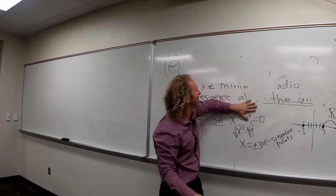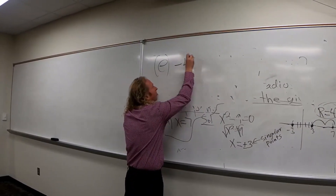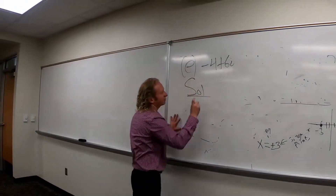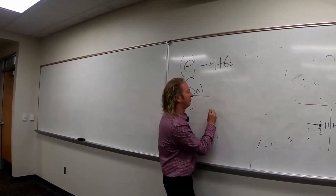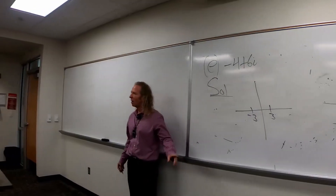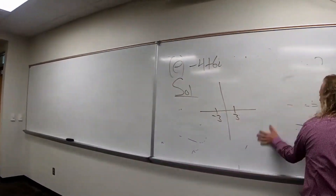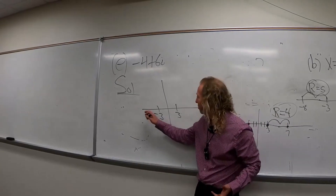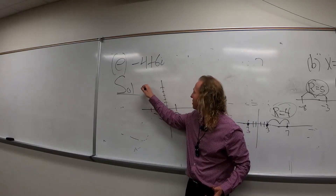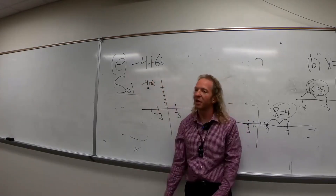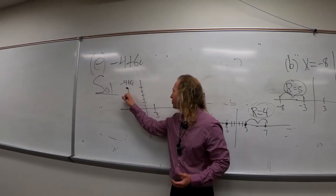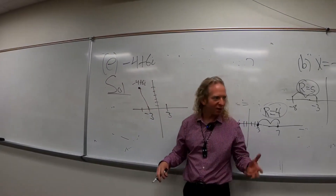Here's another complex number — negative four plus six i. See if you can do it this time. So step one, we draw a picture. Here's three, here's negative three — those are our singular points. Now we have to plot our ordinary point, which is negative four plus six i. So it's like somewhere over here: negative four and then up six. Obviously negative three is closer in this case.